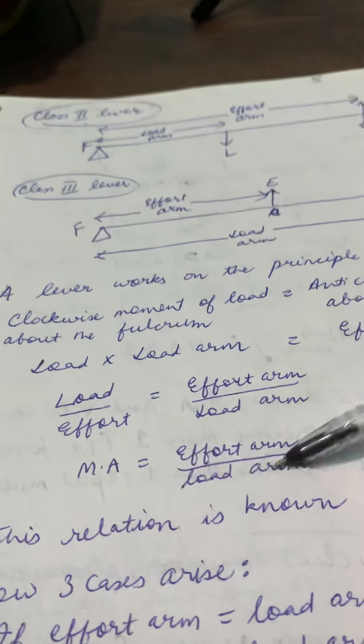This is called the law of the lever. Now, if the effort arm and load arm are both equal, they cancel out and the answer becomes 1 — meaning mechanical advantage equals 1. But if the effort arm is greater than the load arm, the answer will be greater than 1, meaning mechanical advantage is greater than 1.